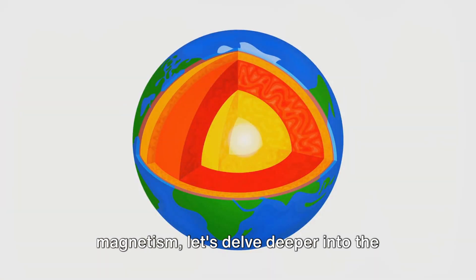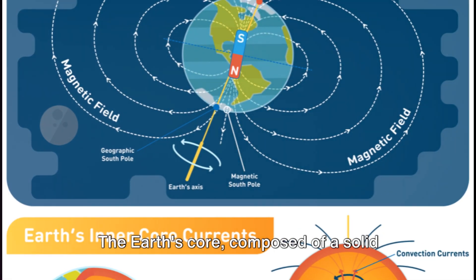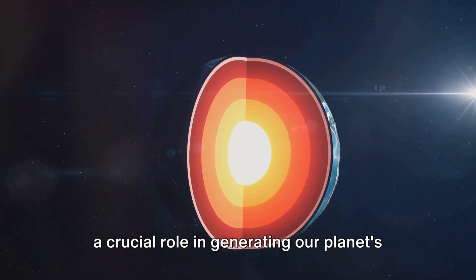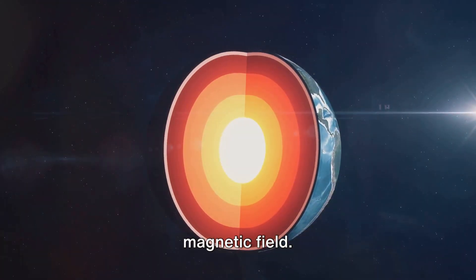let's delve deeper into the heart of our planet. The Earth's core, composed of a solid inner core and a liquid outer core, plays a crucial role in generating our planet's magnetic field.